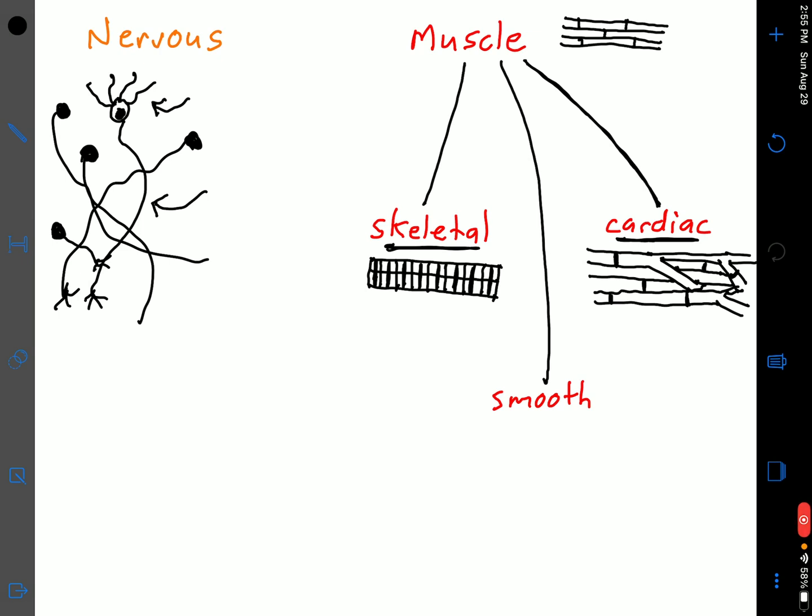How do you get the third muscle type, which is smooth? Pretty much, when you don't see striations, you don't see branching, you don't see intercalated discs, that's smooth muscle. Smooth muscle looks like muscle that is smooth, for the most part.